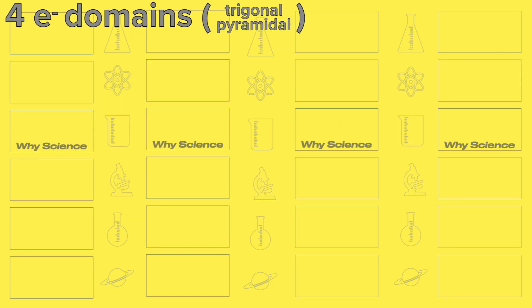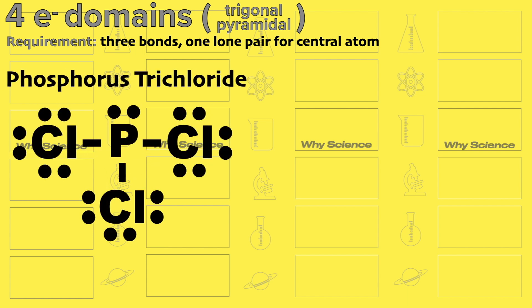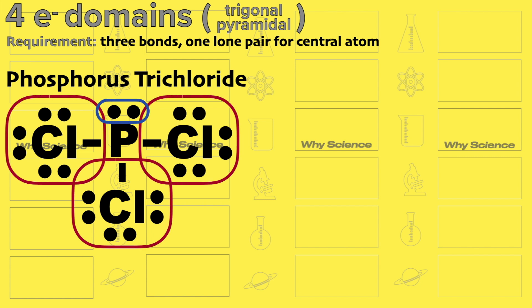When the electron domains are three bonds and one lone pair, the molecule should be trigonal pyramidal like in the case of phosphorus trichloride with this Lewis dot structure. Phosphorus has one lone pair and three bonds with chlorine.